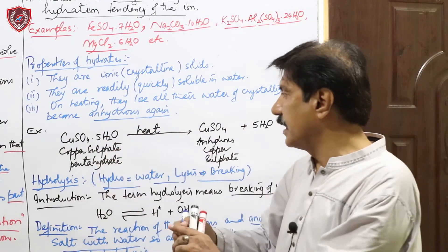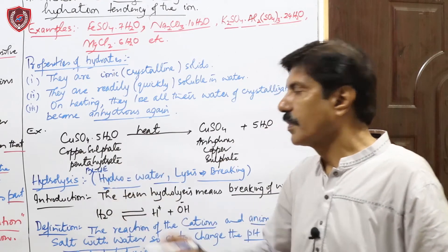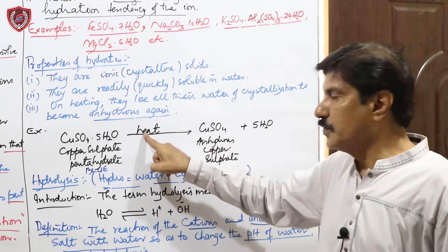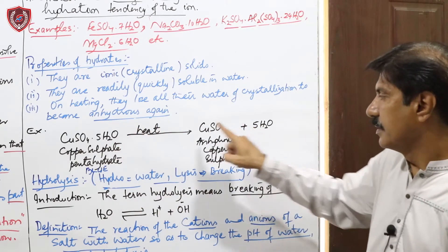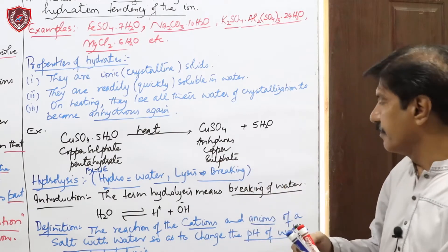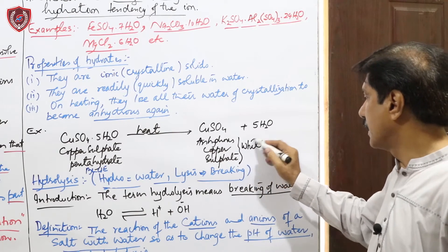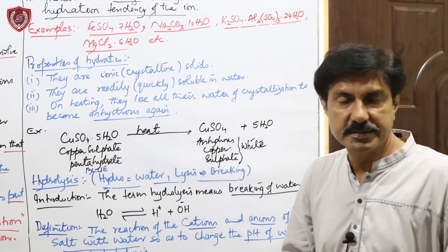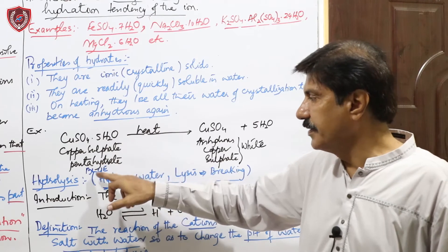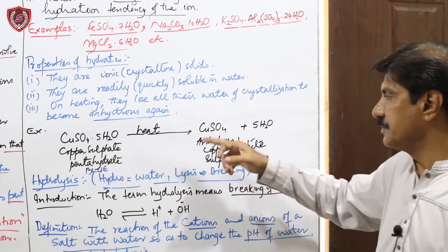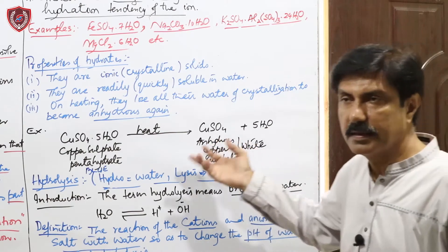Copper sulfate pentahydrate (CuSO₄·5H₂O) اپنی hydrated form میں blue color کا ہوتا ہے۔ جب اسے heat کیا جاتا ہے تو 5 water molecules الگ ہو جاتے ہیں اور یہ anhydrous form میں آ جاتا ہے۔ Anhydrous copper sulfate کا color white یا colorless ہو جاتا ہے۔ اگلا topic ہے: hydrolysis۔